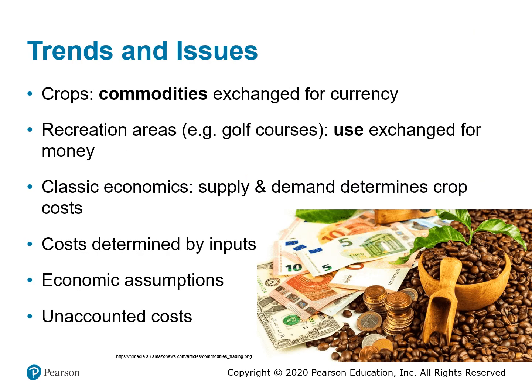Looking at general trends and issues in plant science and horticultural science: traditionally, crops or their use are commodities exchanged for currency. According to classic economics, supply and demand has generally determined crop costs and therefore prices. The costs of products were historically determined by the costs of inputs such as machinery, fertilizers, seed, and labor. Classical economists assume that buyers and sellers are fully informed of the value of commodities and make decisions based on those.